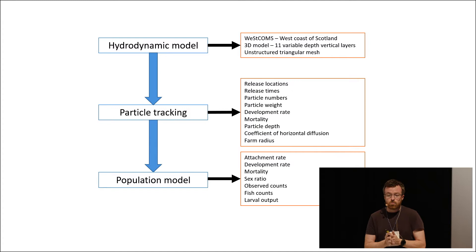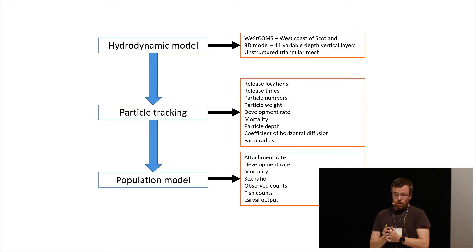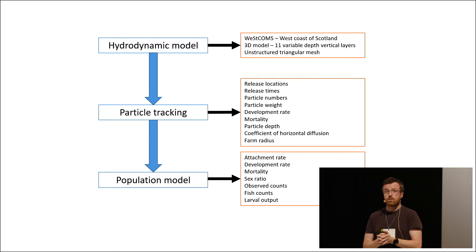The particle tracking feeds into the population model. Some of the important parameters we can change there are attachment rates, development rates, mortality, and sex ratio. The observed counts are supplied to me by both Maui and Scottish Salmon Farm (SSF). They also supply fish counts, and I can take larval outputs from primary literature to drive these models.